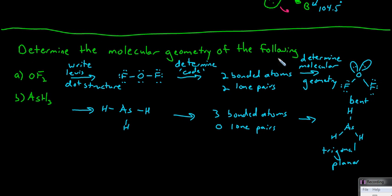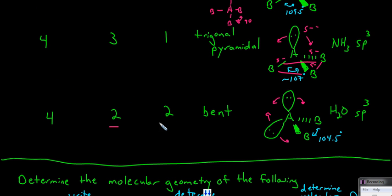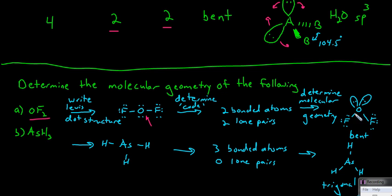If you needed to determine the molecular geometry of a compound, say OF2, you can determine the molecular geometry by determining the Lewis dot structure, which we saw in a previous video. Draw the Lewis dot structure — this gives you a code. Look at the number of bonded atoms on the central atom and the number of lone pairs on the central atom. There are two bonded atoms and two lone pairs on the central atom, so that is a bent structure.